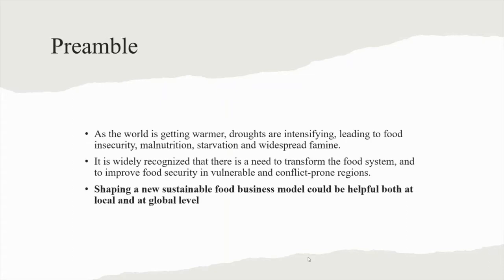Preamble. As the world is getting warmer, droughts are intensifying, leading to food insecurity, malnutrition, starvation and widespread famine. It is widely recognized that there is a need to transform the food system and to improve food security in vulnerable and conflict-prone regions. Shaping a new sustainable food business model could be helpful both at local and at global level.